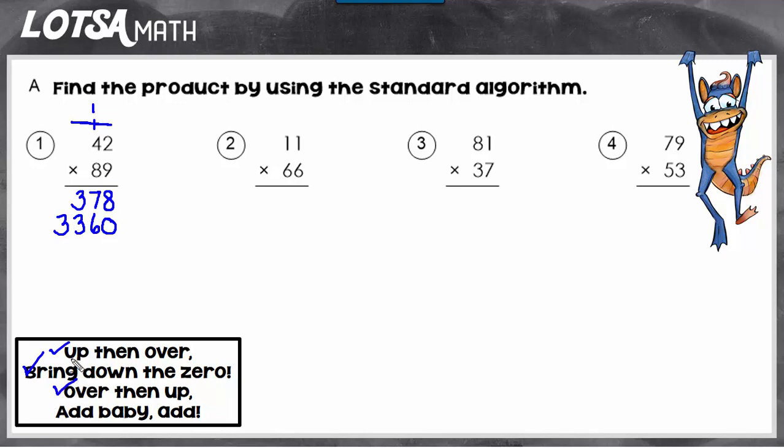So I've done those steps. And the last step is add, baby, add. So we're just going to add up our two partial products that we made. So that's the answer.